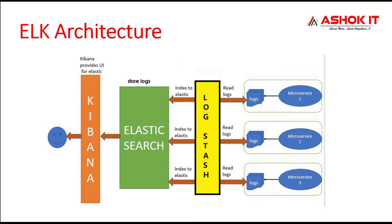ELK stack is the combination of three open source products: Elasticsearch, Logstash, and Kibana. As you see in the diagram, Logstash is responsible for reading logs from the log files and indexing those logs into Elasticsearch. Elasticsearch is used to store all the logs at one place. Once the logs are stored in Elasticsearch, we use Kibana to retrieve them. Kibana provides a beautiful user interface to retrieve logs from Elasticsearch — based on time, date, or some pattern.